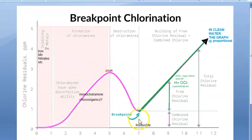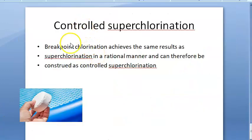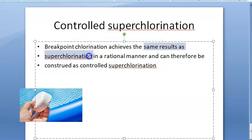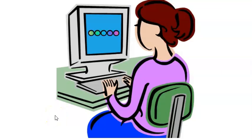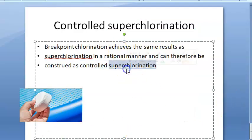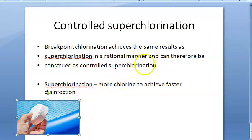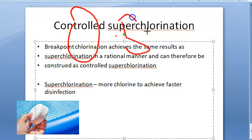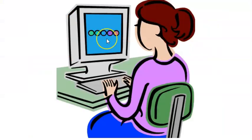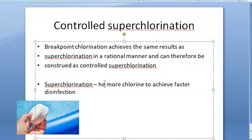Breakpoint chlorination means free residual chlorine starts appearing and all impurities are gone. There is an important statement: breakpoint chlorination achieves the same results as super chlorination in a rational manner, and therefore it can be construed as controlled super chlorination. In super chlorination, excess chlorine is added to achieve faster disinfection, but with breakpoint chlorination you add a specific amount to achieve 0.5 mg/L free residual chlorine — a more controlled approach.